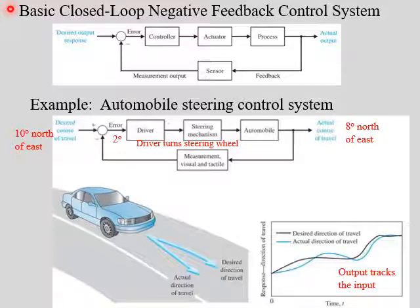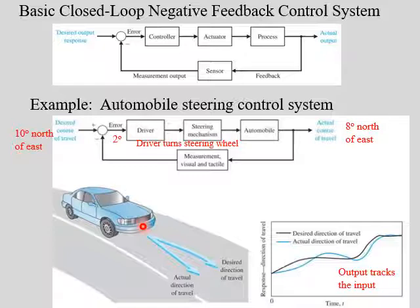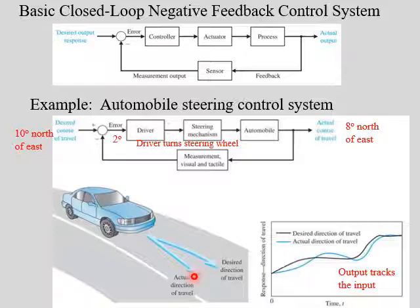Let's look at another example of a closed-loop negative feedback control system — an automobile steering control system. When you're driving your car and the road turns a little bit, your car would go off the road if you did nothing. You're constantly making adjustments to the steering wheel depending on the position of your car on the road. In this example, the desired direction of travel is straight down the road, but if the car starts to veer to the right, we'll notice that with our eyes — our visual sensor — and make an adjustment.